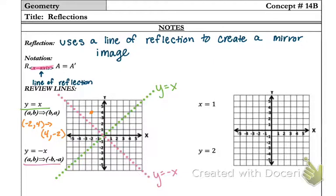So it would become at 4, negative 2, which is here. So I can see that's a and a prime.